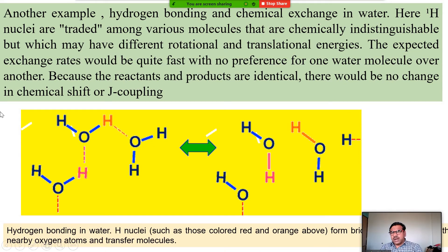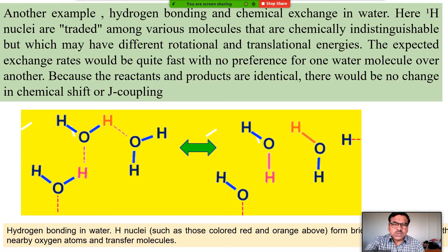Looking at another example — hydrogen bonding and chemical exchange in water. Here, proton nuclei are traded among various molecules that are chemically distinguishable but which may have different rotational and translational energies. The expected exchange rates would be quite fast with no preference for one water molecule over another, because the reactants and products are identical. There would be no change in chemical shift or coupling constant J.